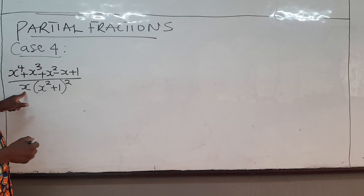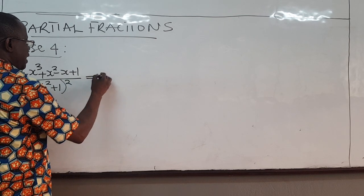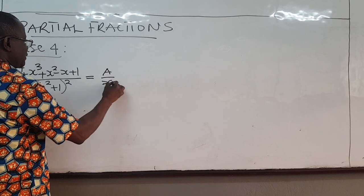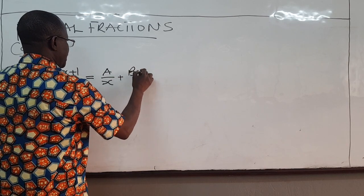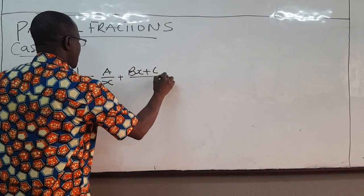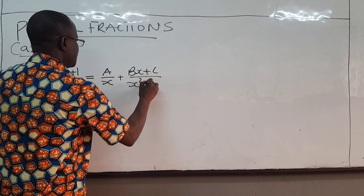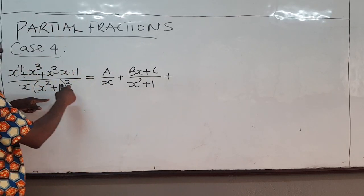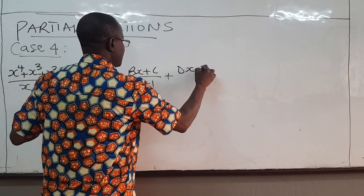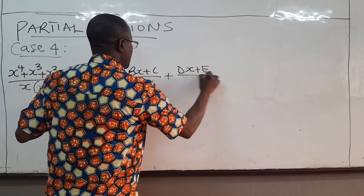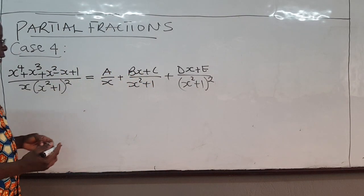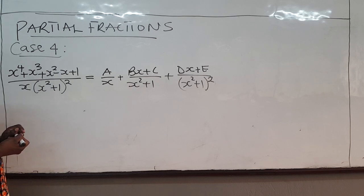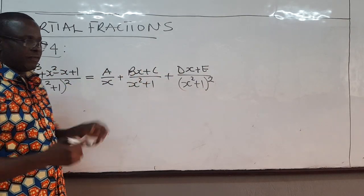So in this case, since x is linear, we write this as some constant A over x. The quadratic is irreducible, so we write it as Bx plus C over x squared plus 1. And because it's squared, we also need Dx plus E all over x squared plus 1, all of that squared. The plan is to solve for A, B, C, D, and E as we've done before.